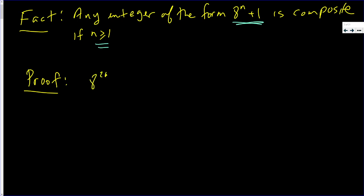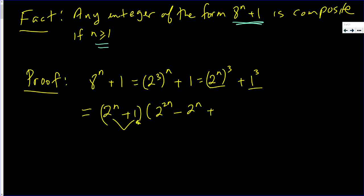8^n + 1 is the same as (2^3)^n + 1, which is (2^n)^3 + 1. I'm going to think of the 1 as 1^3. We have a sum of cubes, which factors to (2^n + 1)(2^(2n) - 2^n + 1).